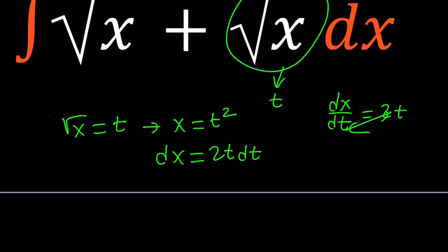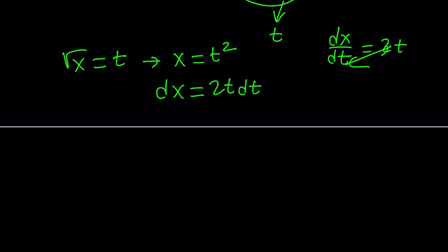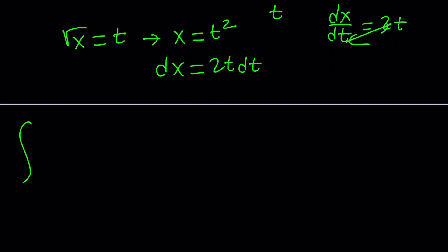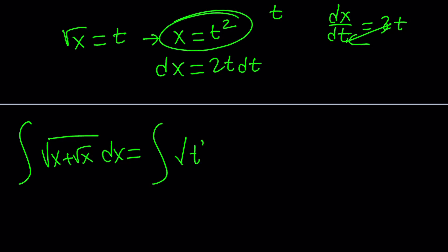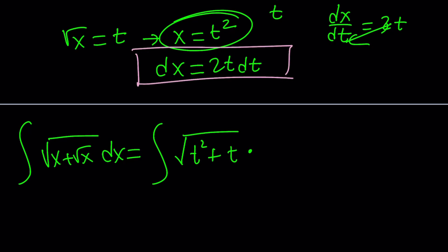We have everything we need, so let's start substituting. The integral of the square root of x plus square root of x dx can be written as: the square root of x is t², so we get the square root of t² + t, and we replace dx with 2t dt. This is our new integral, and it's easier than the original because we don't have to worry about denesting the radical.